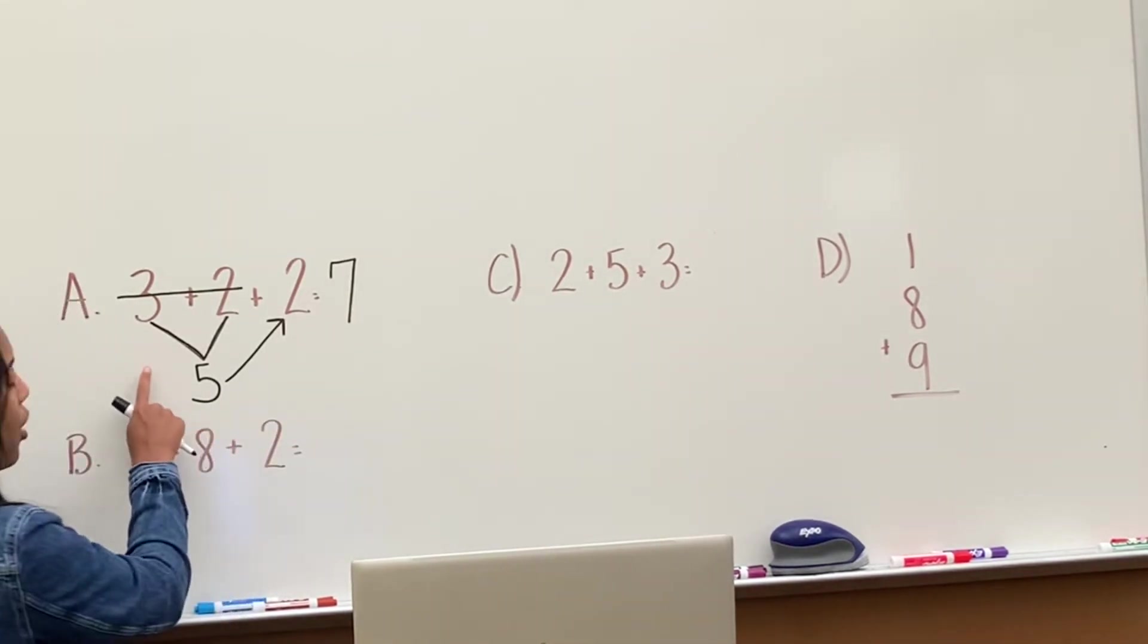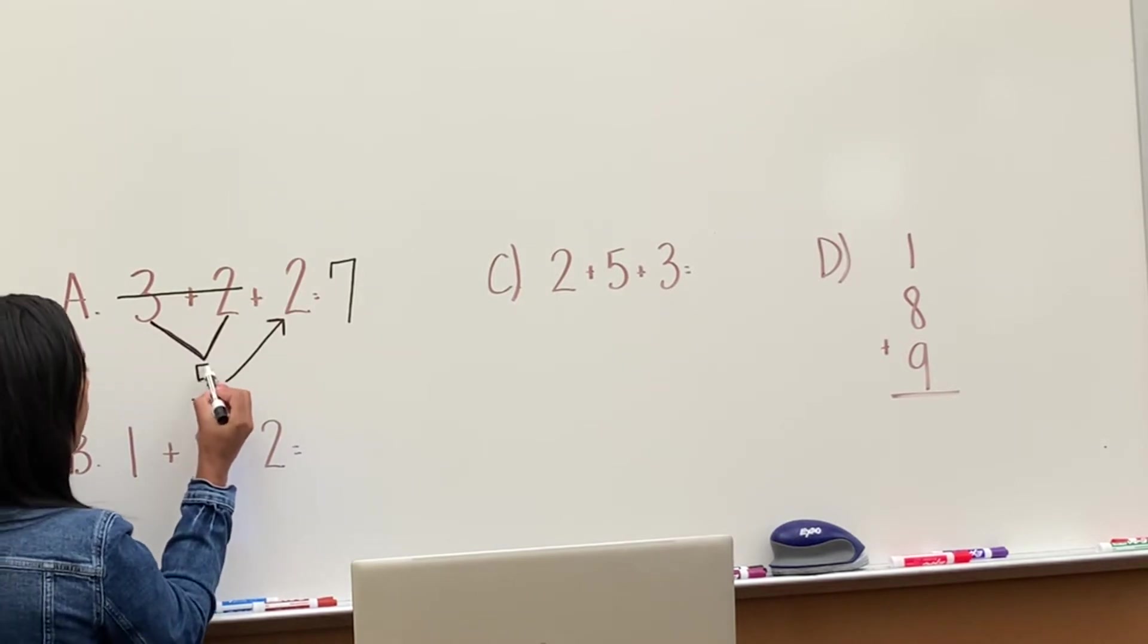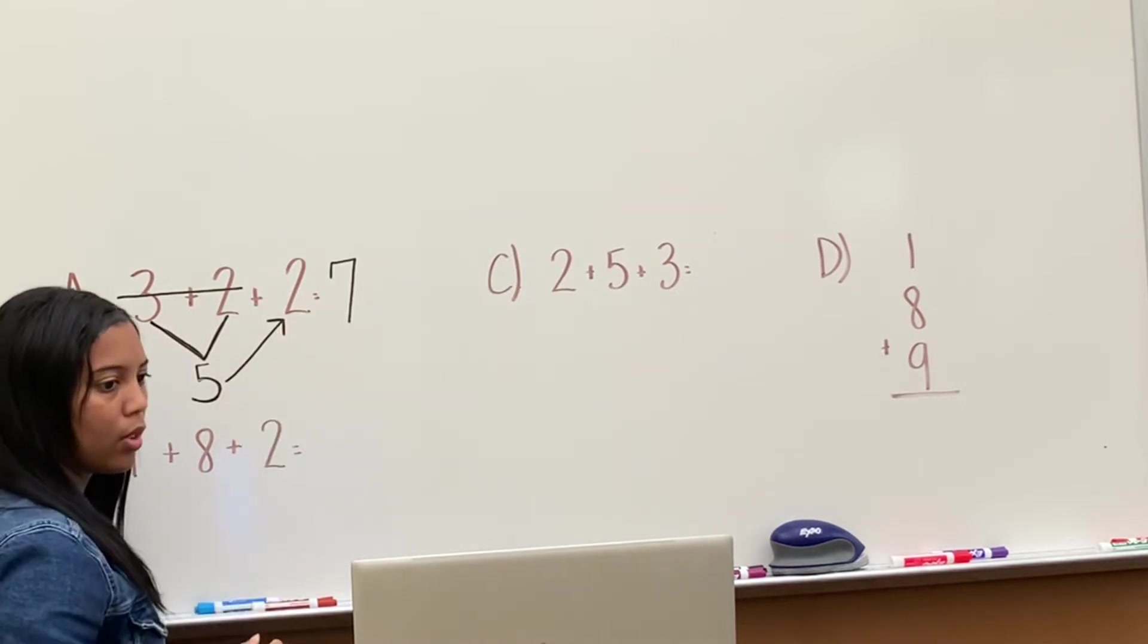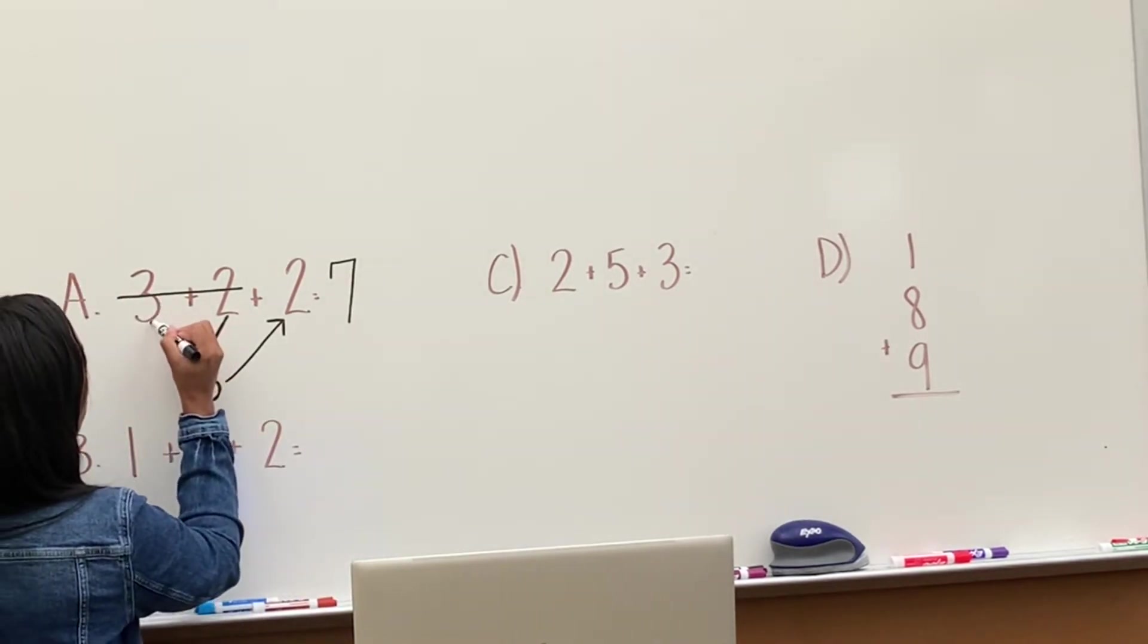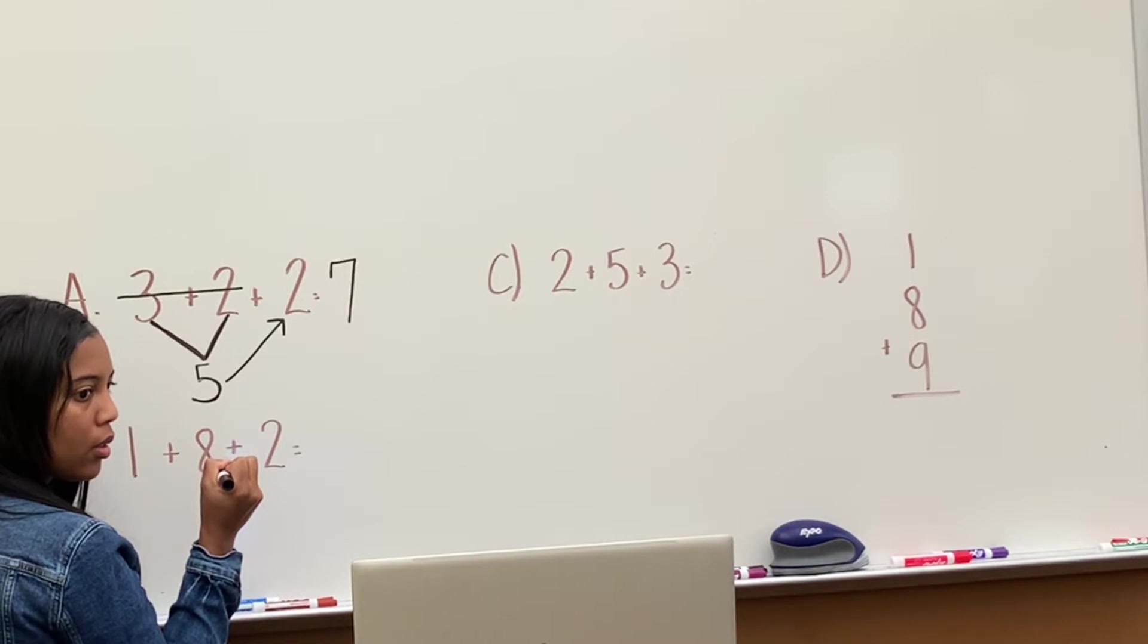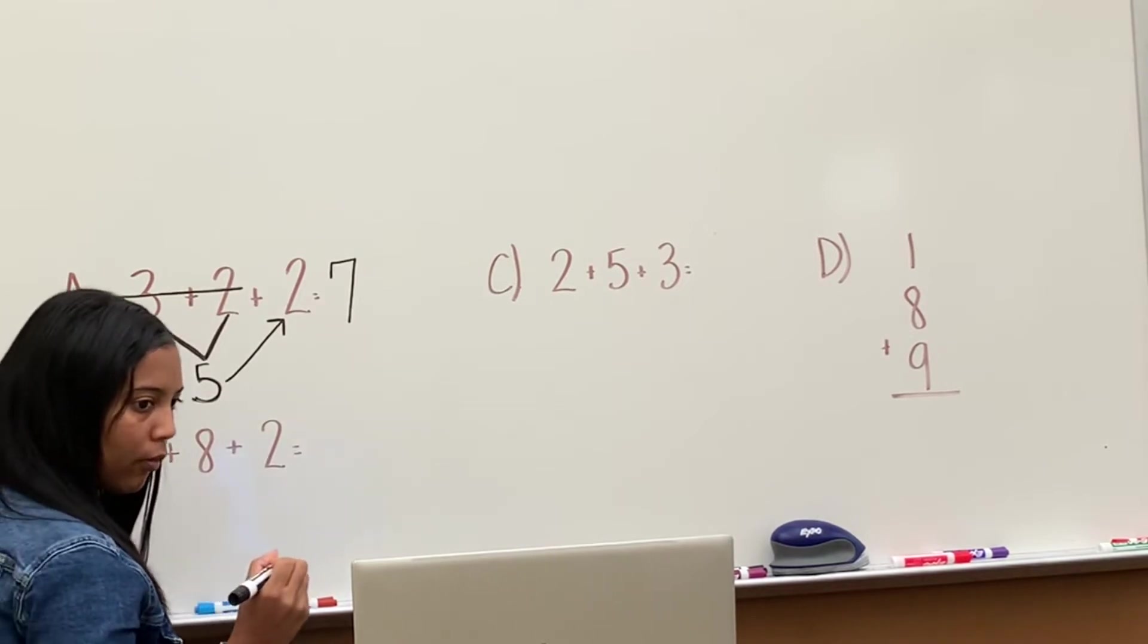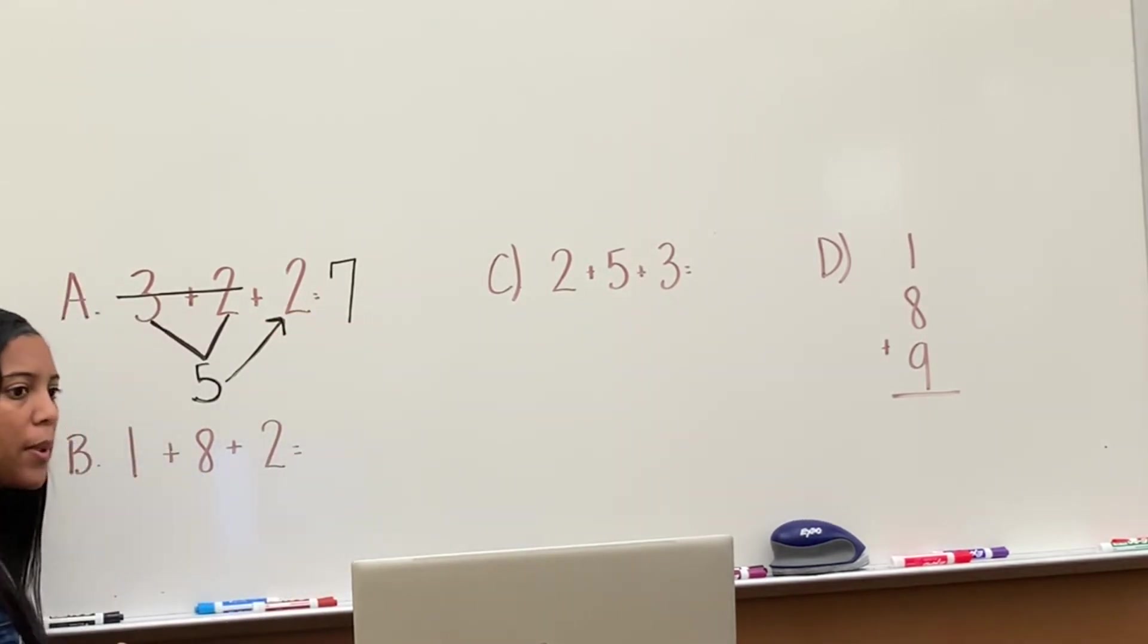Could everyone do this on A just like I did? Go ahead and connect 3 and 2 and that equals 5. Then cross out 3 plus 2 and then connect 5 to the 2. Draw the triangle to connect 3 plus 2. You'll put 5 underneath the triangle because you are showing that 3 plus 2 equals 5. Then cross out 3 plus 2. With your 5, you draw an arrow to show that now you're adding 5 plus 2 and that equals 7.